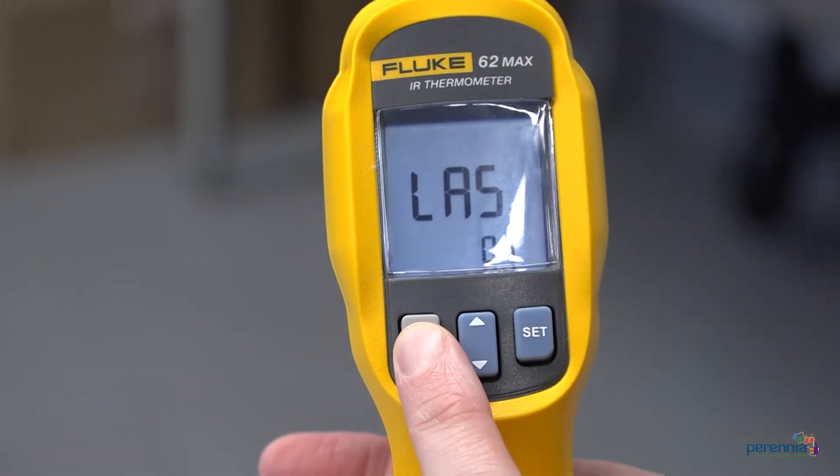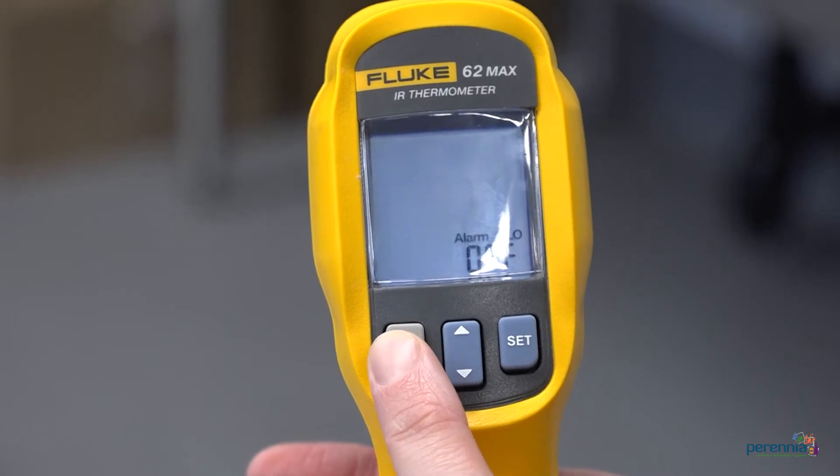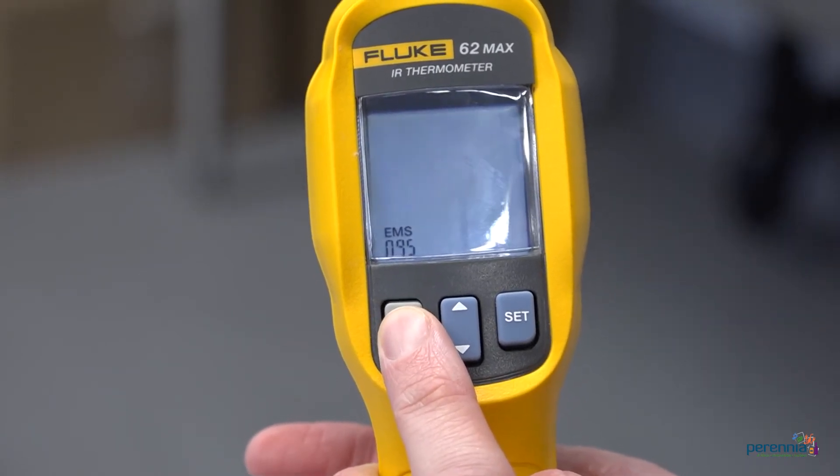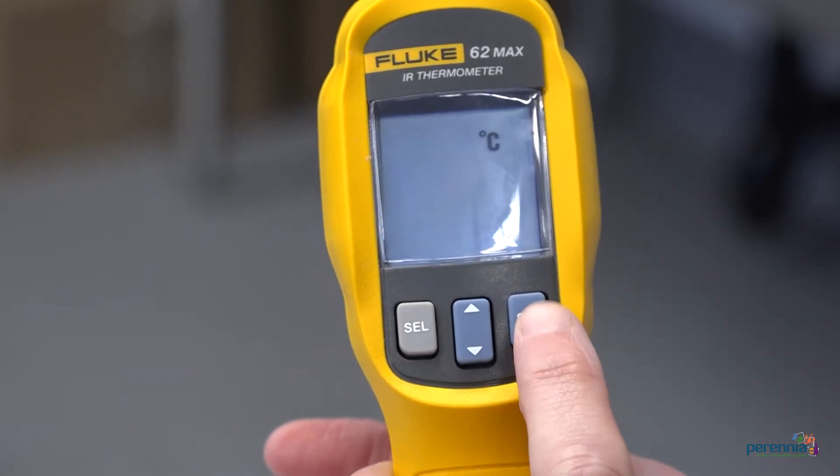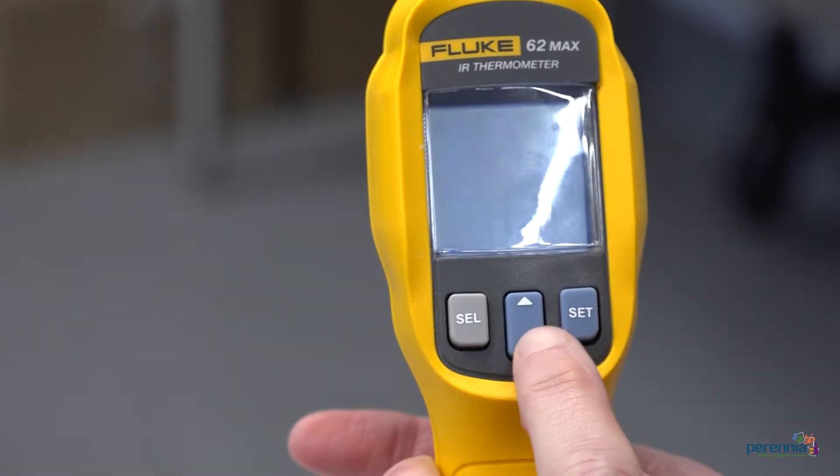Step three, set the unit to degree Celsius. Push the SEL select button until degree Celsius is shown. Change by pushing the set button.